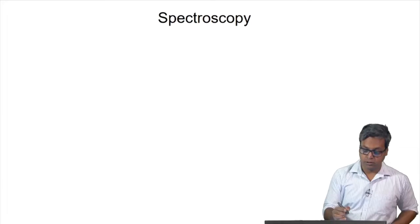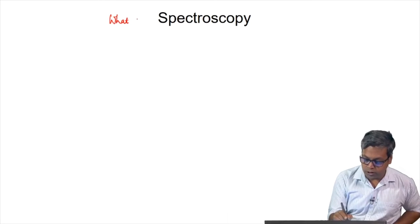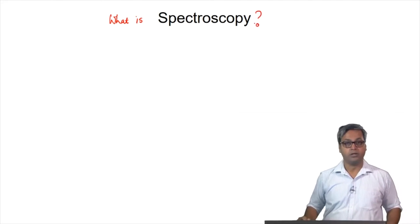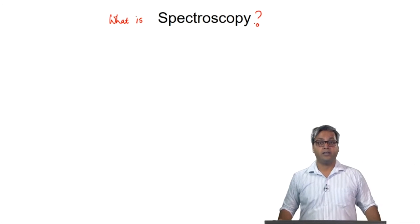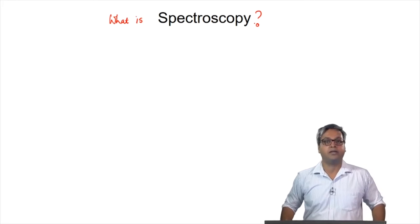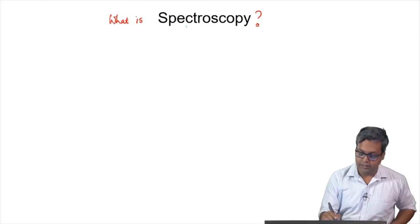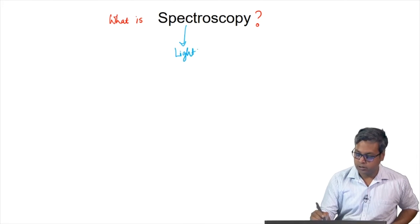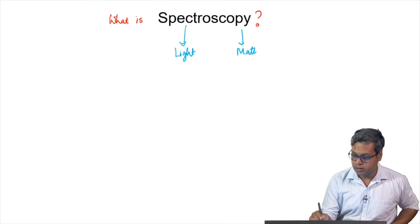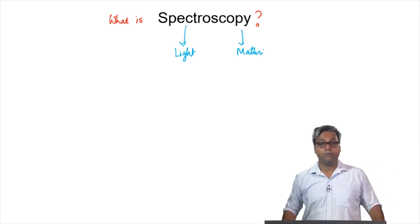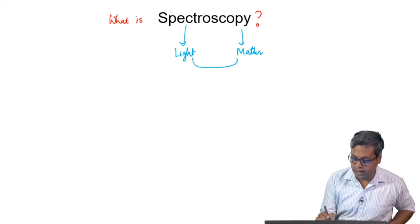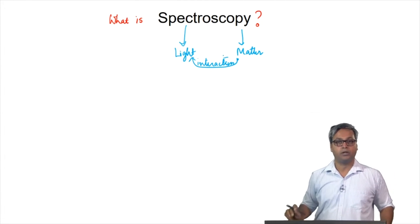So because we are talking about spectroscopy, the first question we would ask is what is spectroscopy? Spectroscopy is defined as the interaction between light and matter. In other words, we have two things in spectroscopy: we have light and we have matter, and in addition to that, we have some interaction between light and matter.